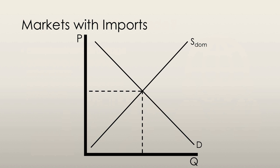Let's start with a basic supply and demand graph for any arbitrary good or service. We have an upward sloping supply curve and a downward sloping demand curve. At their intersection is the equilibrium price and quantity that will be produced and consumed domestically.